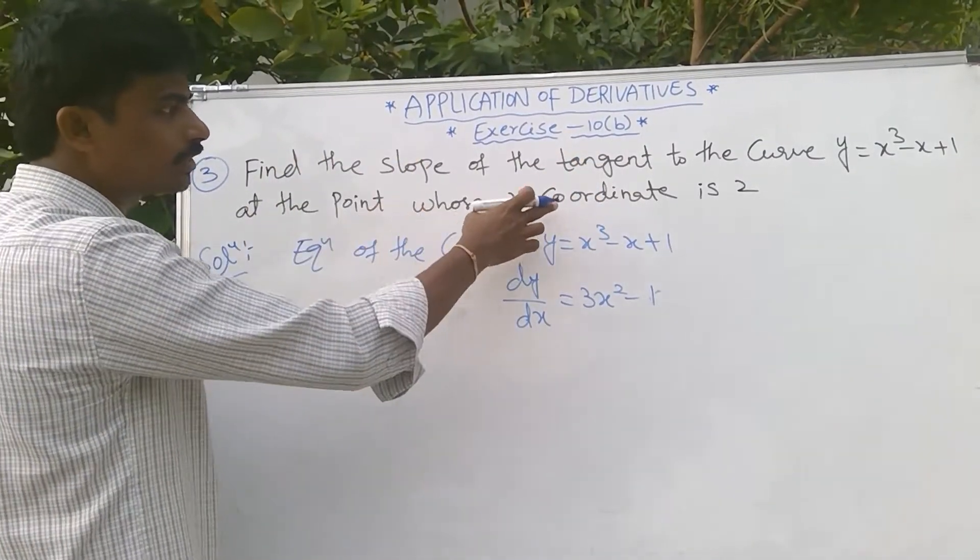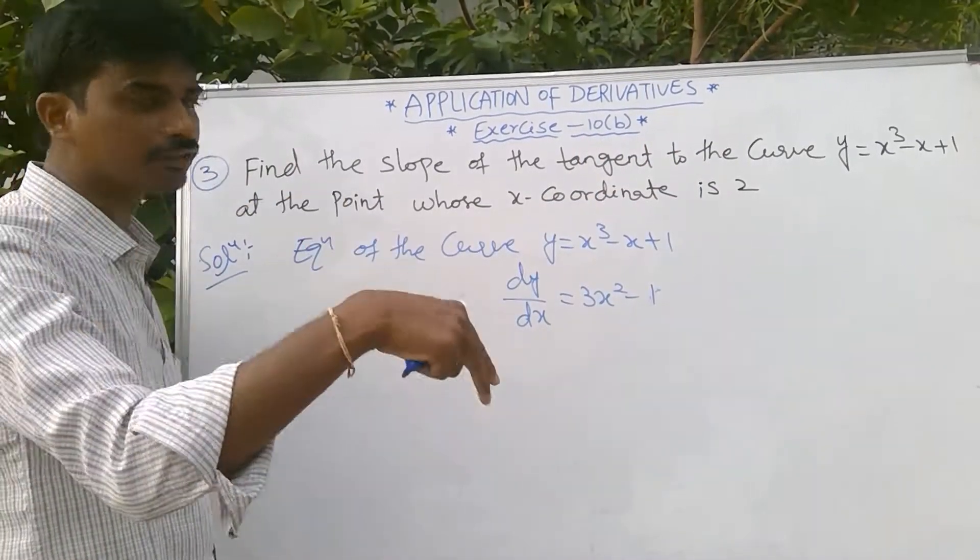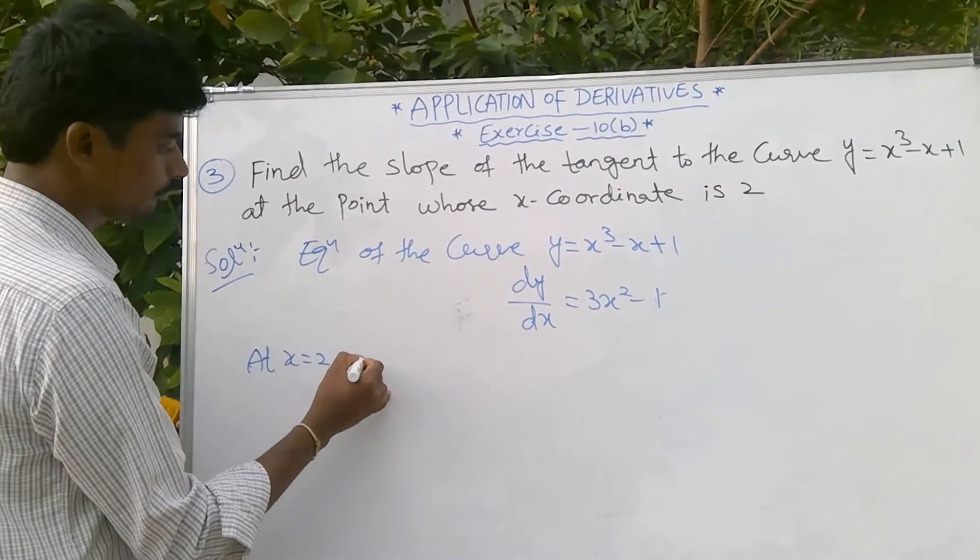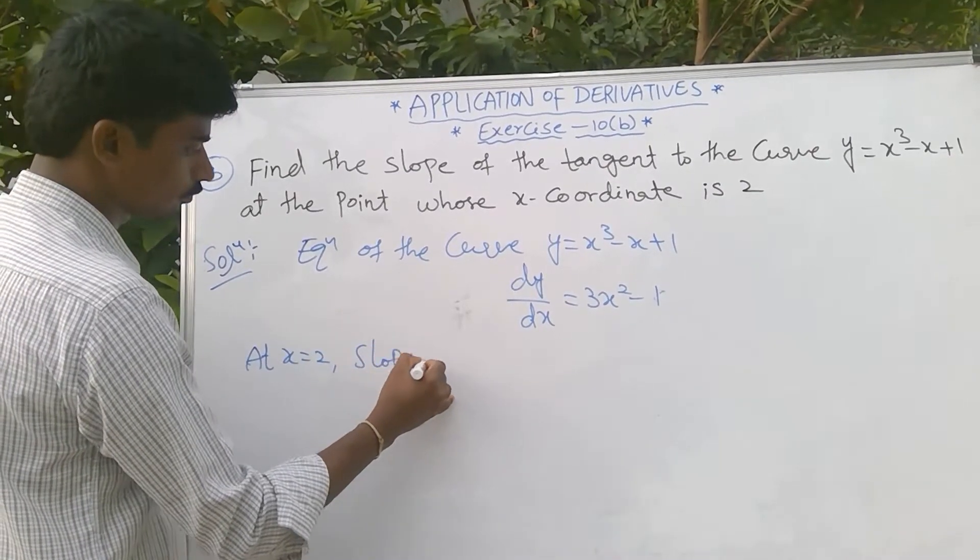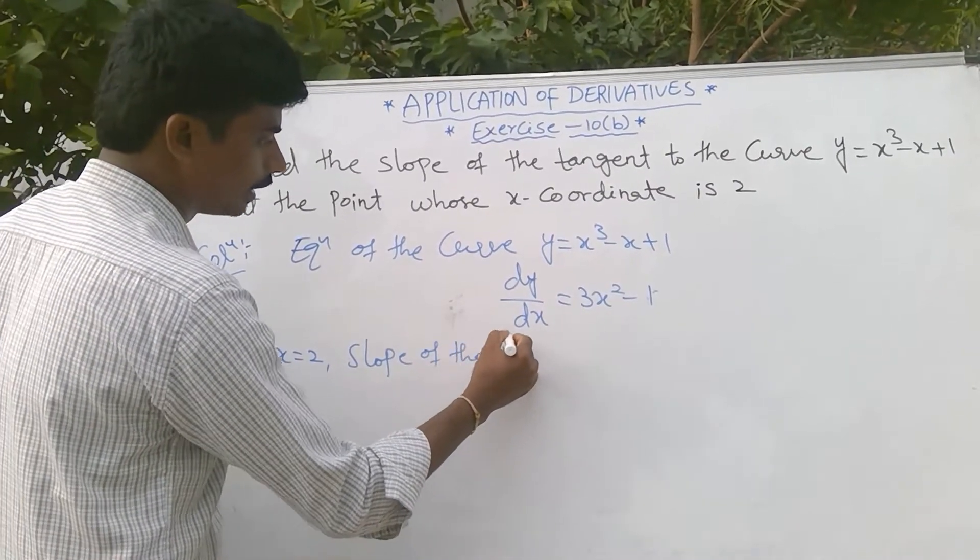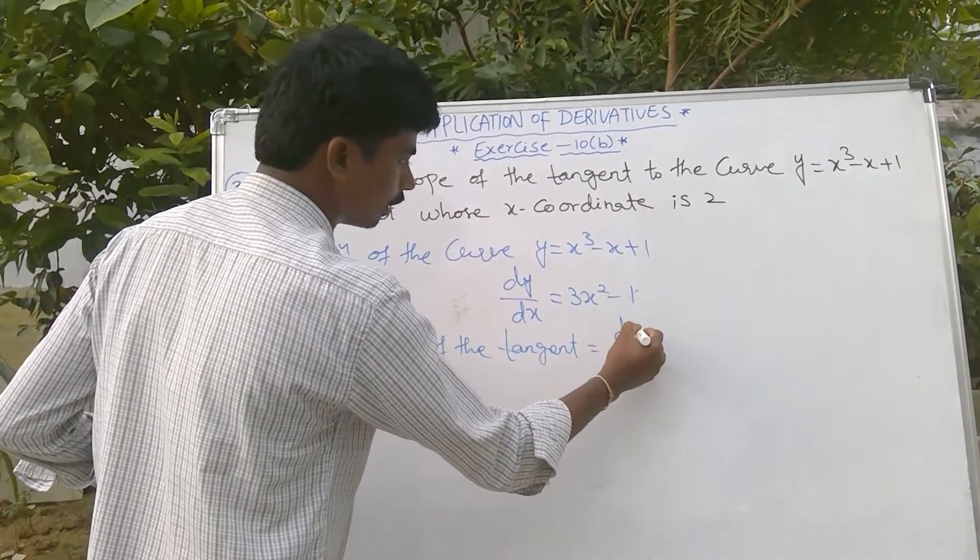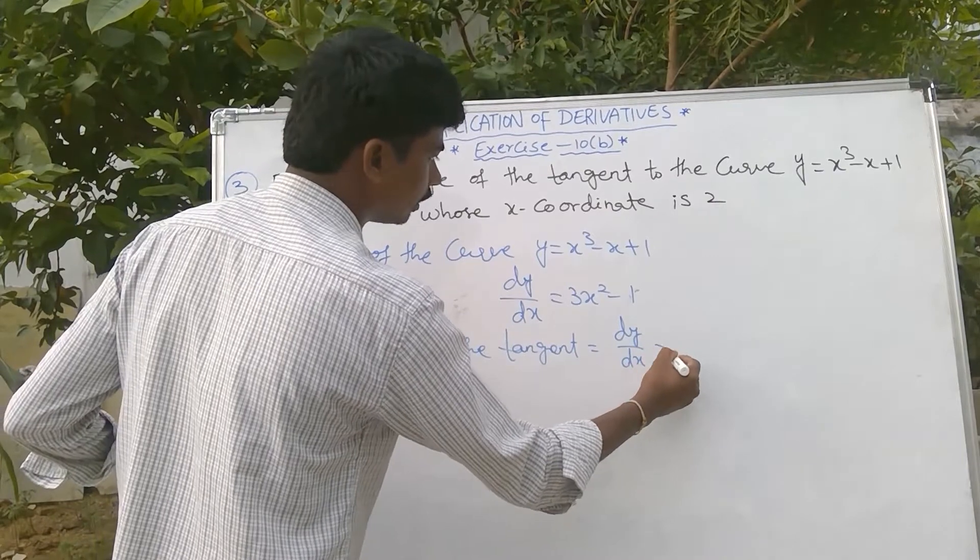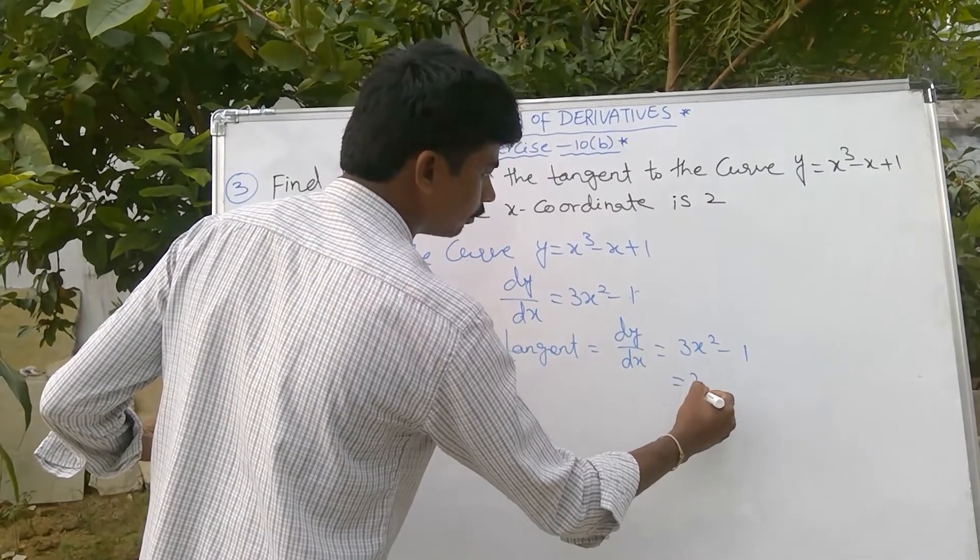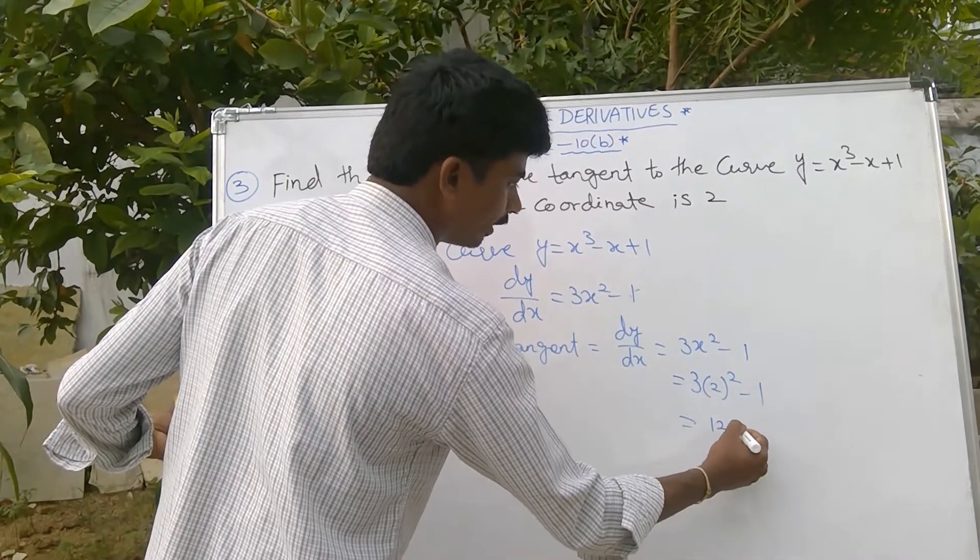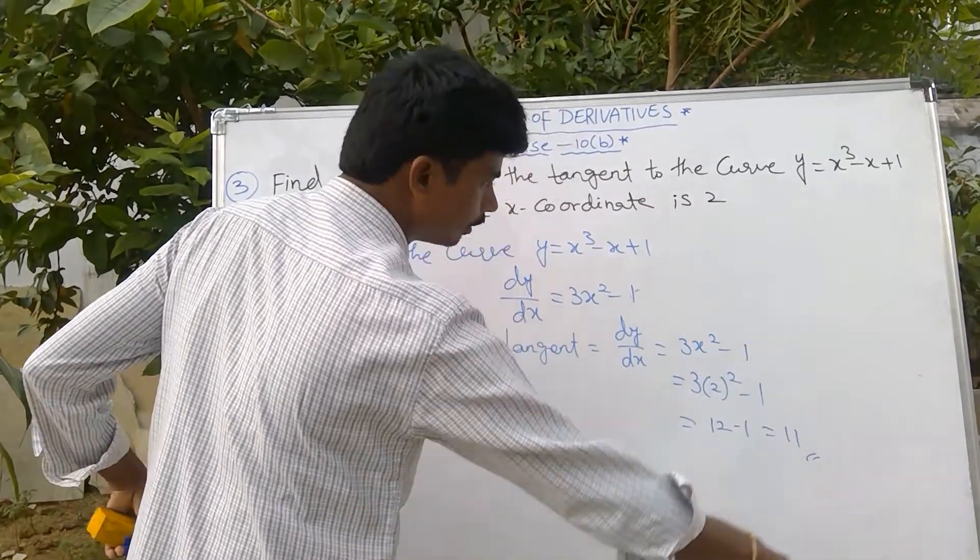Now whose x coordinate is 2, that means x = 2. Slope of the tangent equals dy/dx = 3x² - 1 = 3(2)² - 1 = 3·4 = 12 - 1 = 11.